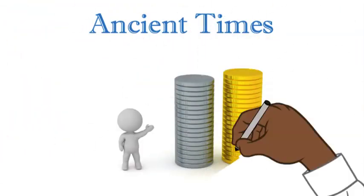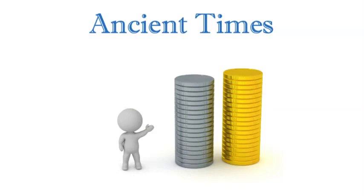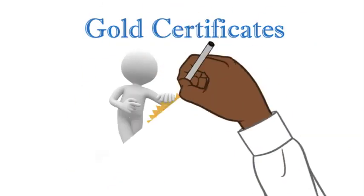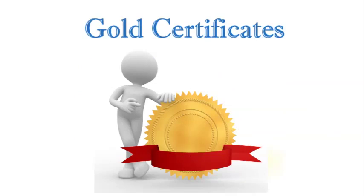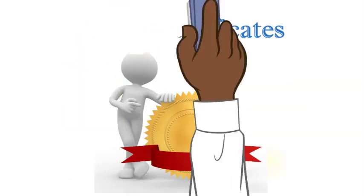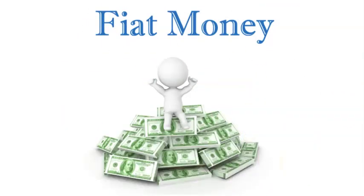In ancient times, money was gold and silver. Later on, currency represented a claim on gold, such as a gold certificate. Now we have fiat money. This currency has value by government decree — in other words, it is backed by the full faith and credit of the local government.